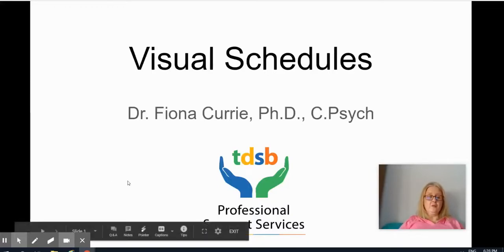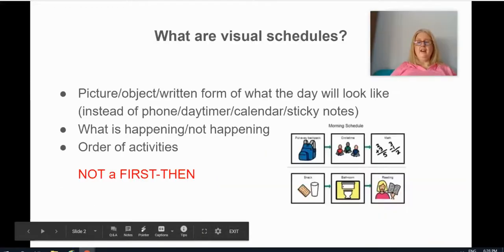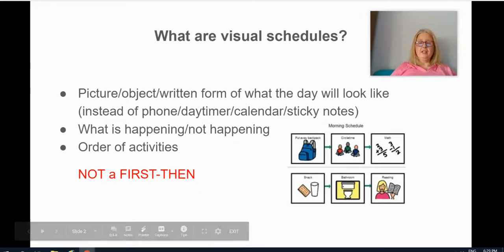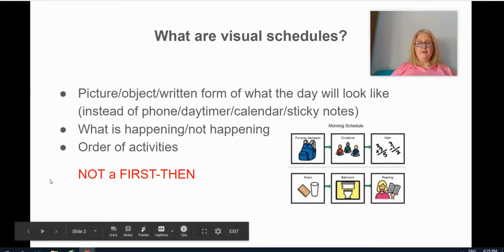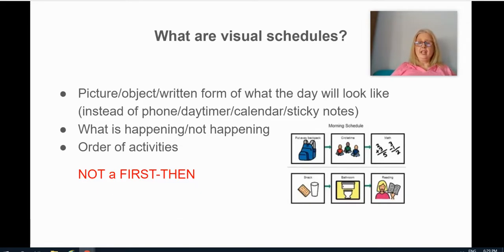So, visual schedules — what are they? They can be used in a number of different ways, either with pictures, objects, or in written form showing what the day will look like. What are you doing in the morning? What are you doing in the afternoon and evening? It's like what you do when you're looking at your phone or your day timer — how many times do you check it per day to see what appointments you might have, things you have to do, or calls you have to make?